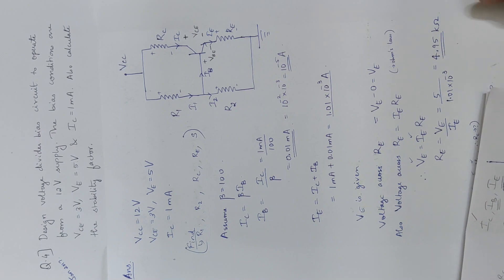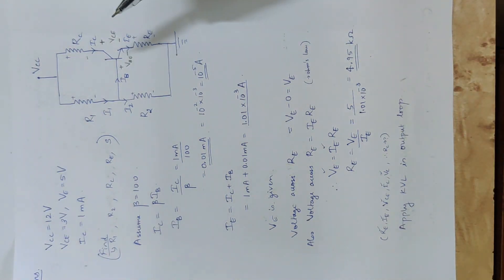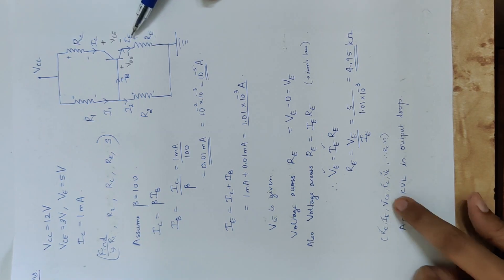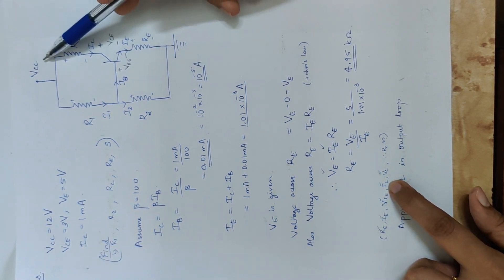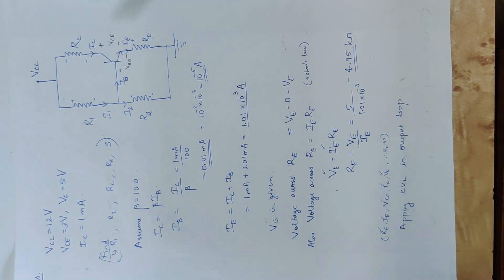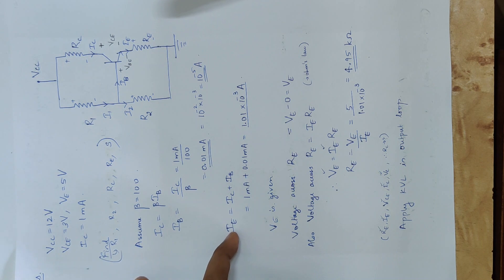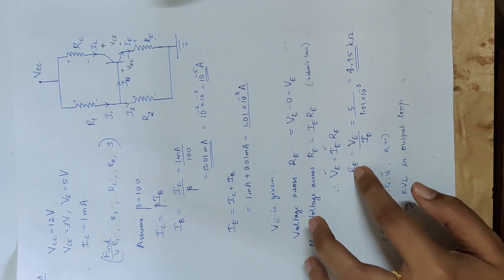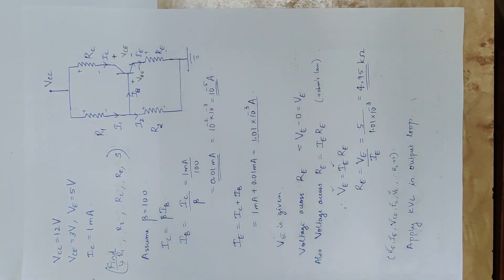This is the value of emitter resistance RE equal to 4.95 kOhm. Now we apply KVL in the output loop to find the collector resistance RC value. The procedure for voltage divider bias circuit design is: find IC, IB, IE, then RE value, then apply KVL in the output loop.